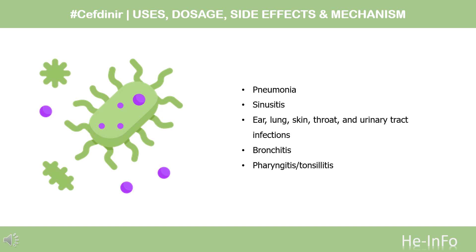What is cefdinir used for? Cefdinir is indicated to treat acute bacterial otitis media, acute maxillary sinusitis, community-acquired pneumonia, acute bacterial exacerbations of chronic bronchitis, pharyngitis/tonsillitis, and uncomplicated skin and skin structure infections in children and adults. The organisms susceptible to cefdinir have been listed below, along with their associated clinical conditions that may be treated with cefdinir.